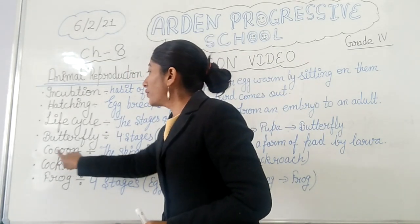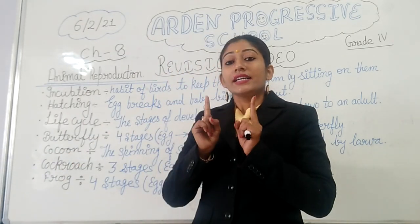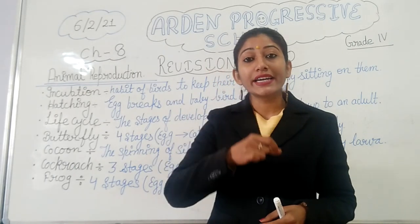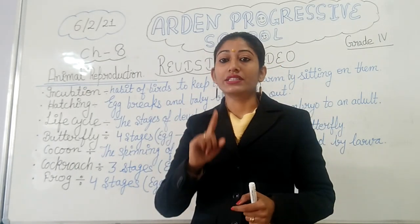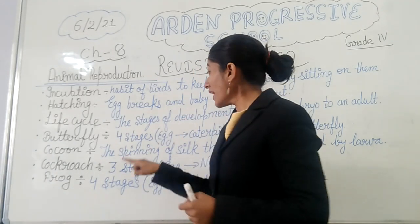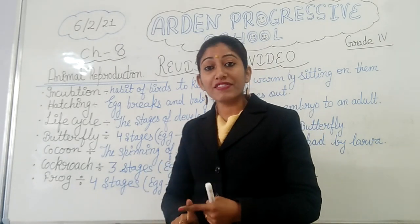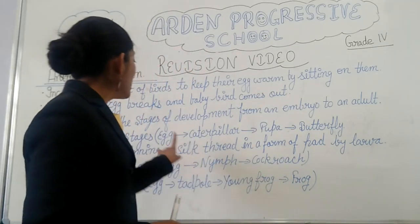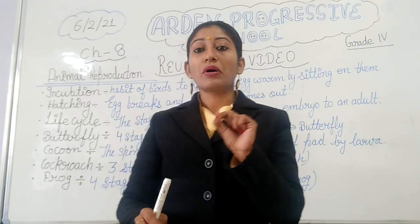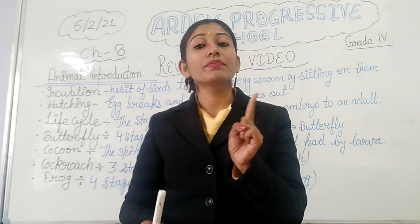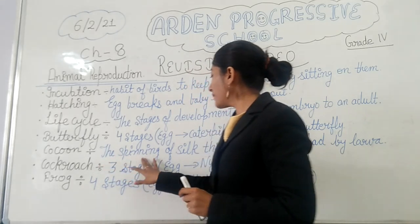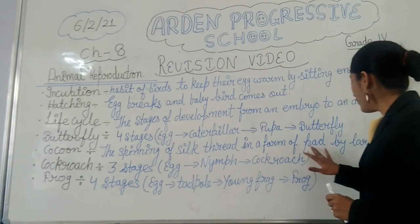Next you can see here one word: Cocoon. Now what is cocoon? You have to remember that cocoon is a word related to butterfly only, but this word does not come under the stages of the life cycle of butterfly. When we talk about the life cycle of butterfly, we have only four stages: egg, caterpillar, pupa, and butterfly. Cocoon means the spinning of silk thread in the form of a pad by the larva.